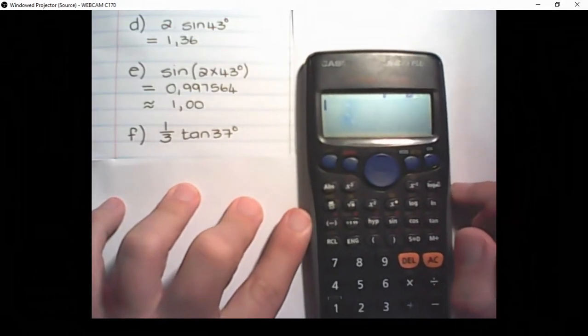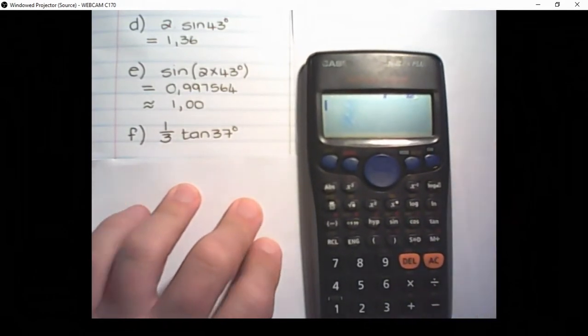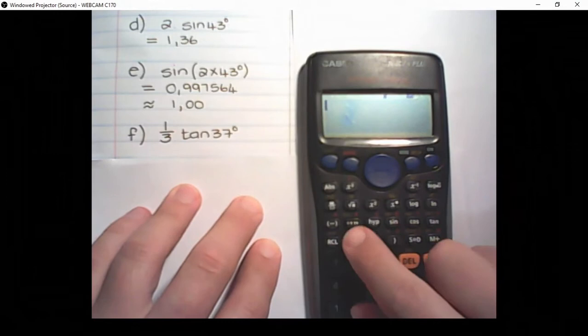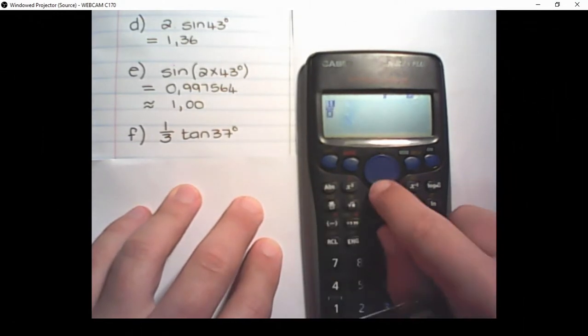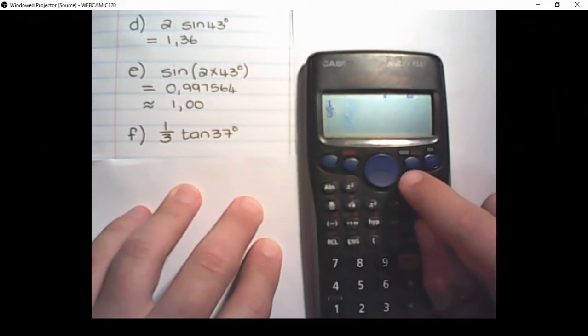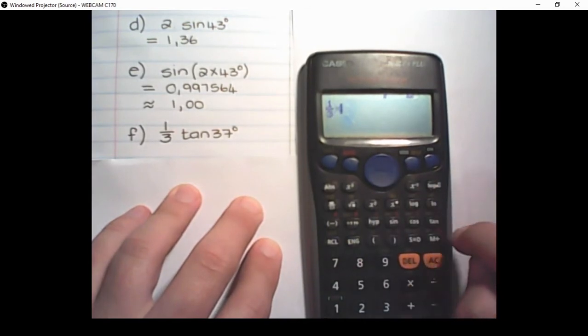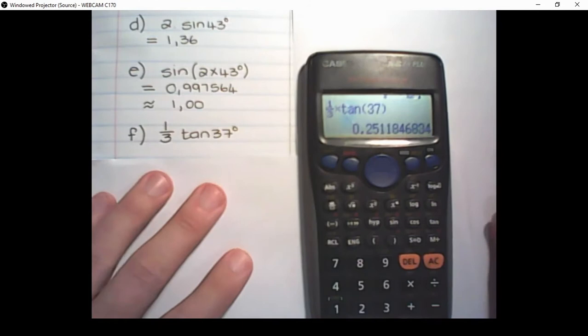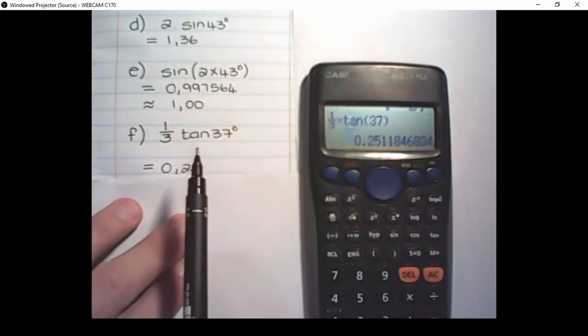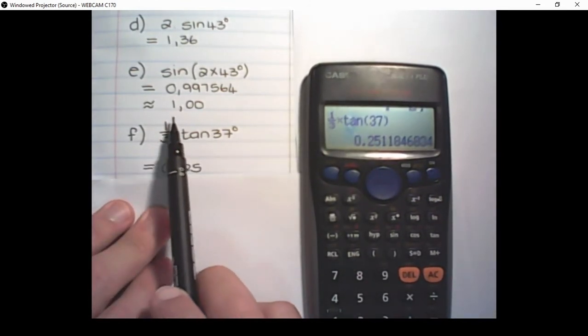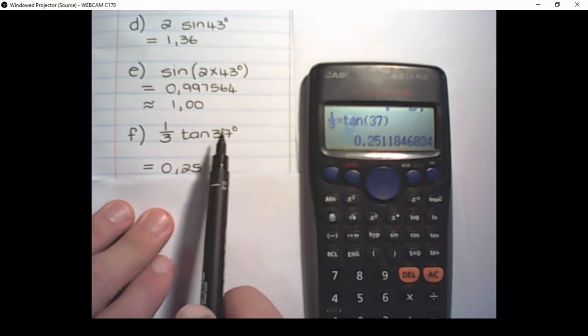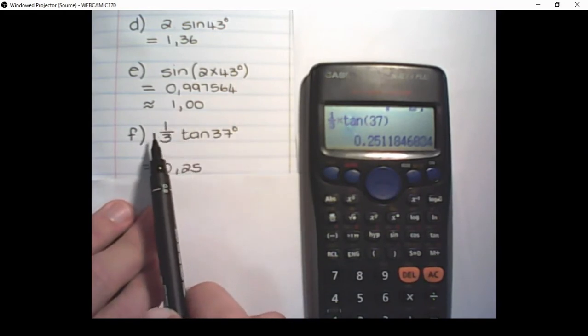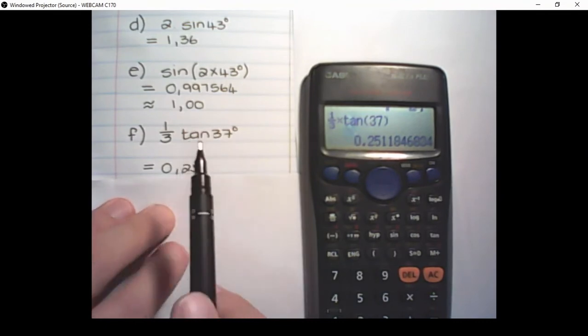Our next example is a third tan 37. So what I'll do, I'll create a fraction. So it's 1 over 3 times tan of 37. Close the bracket. That is equal to 0.25. But it's important. I'm not multiplying or dividing the angle by 3. I am taking a third of the full value of tan of 37.